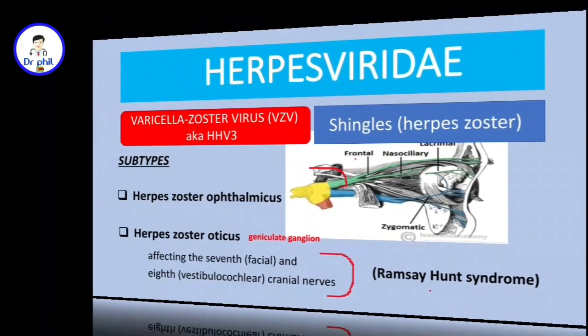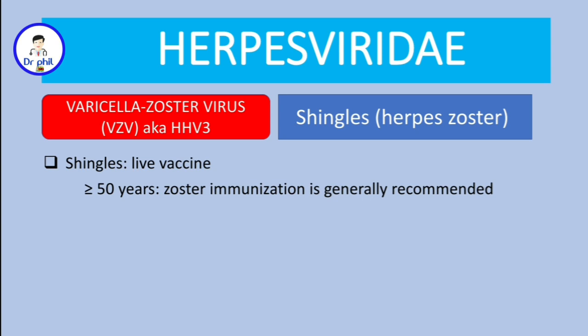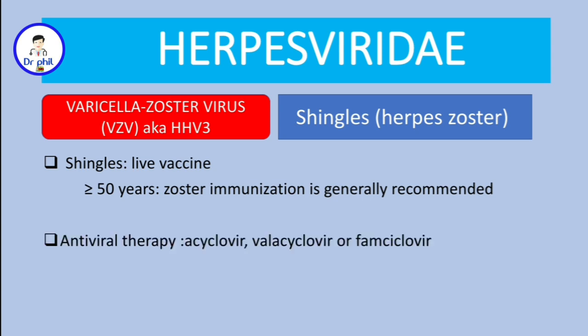To prevent shingles, a live vaccine is available and indicated for individuals 50 years and above. It should not be given to immunocompromised individuals, such as those with leukemia, lymphomas, or HIV-positive patients with CD4 count less than 200. Antiviral therapy includes acyclovir, valacyclovir, and famciclovir.